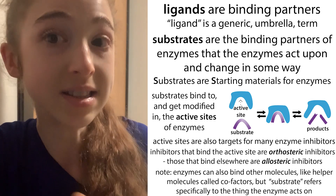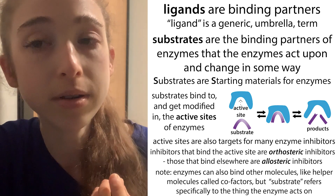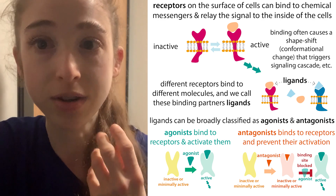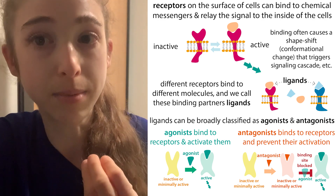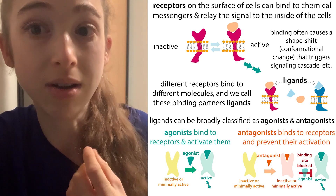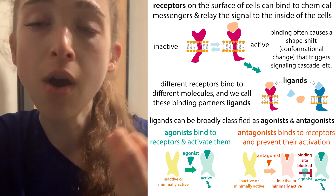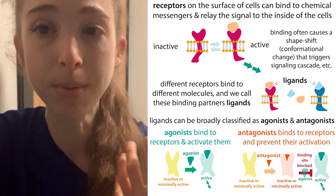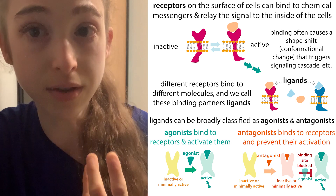Ligand and substrate are the two main terms we use to describe binding partners, but there are also a bunch of other terms we can use to further characterize and classify these different binding partners. For example, when we're talking about receptors, we might talk about agonists — things that bind to a receptor and activate it — or antagonists, things that bind to a receptor and prevent the agonist from binding, thereby decreasing the activity of the receptor.